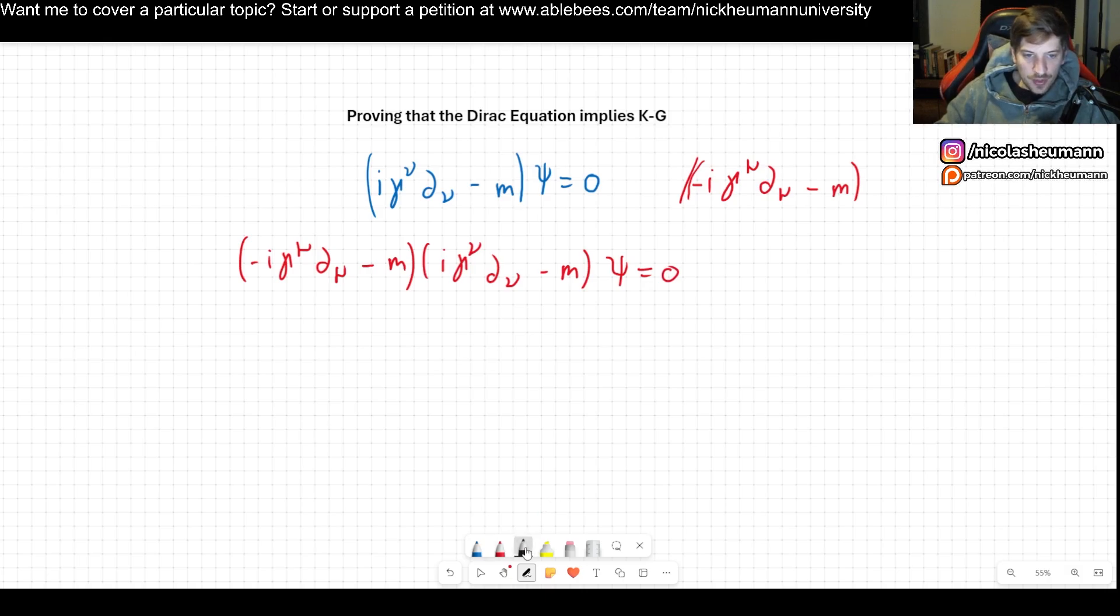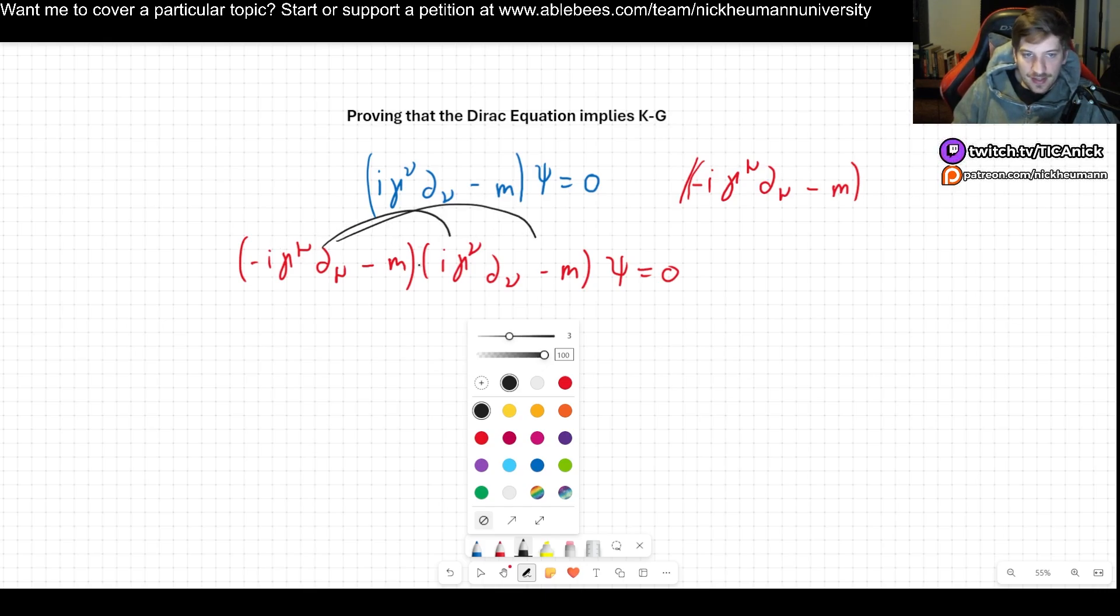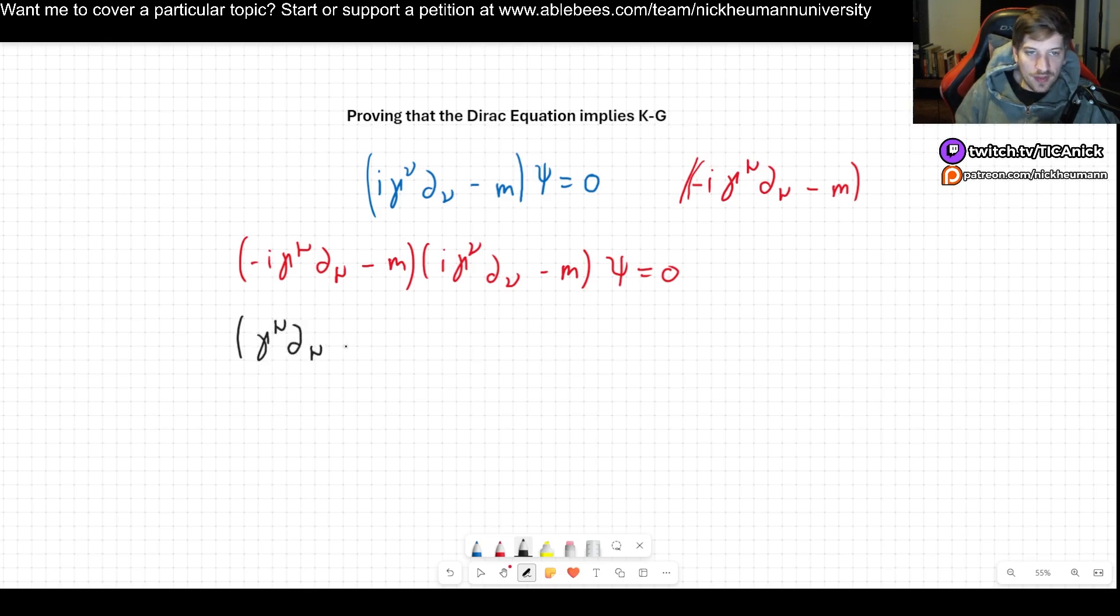Now what we're going to do is just multiply, so this times this, this times that and so on. Nothing crazy here. So the first one is I times I, we get a minus sign which cancels out this minus sign so we have plus gamma mu.